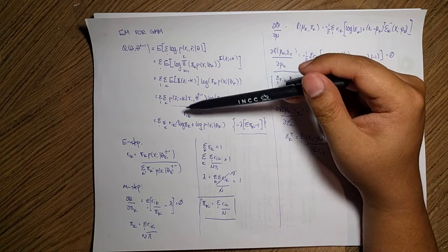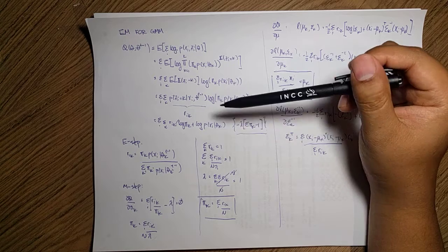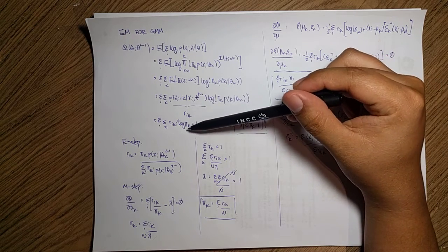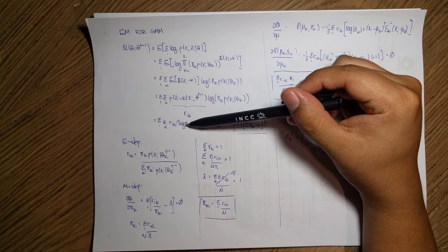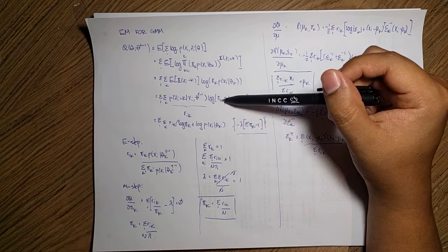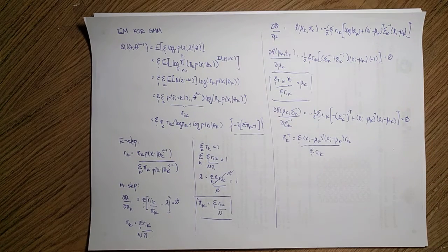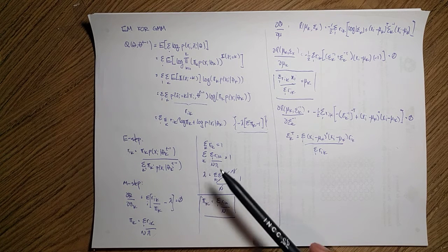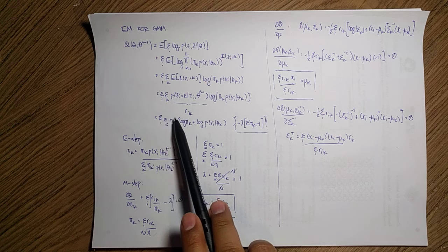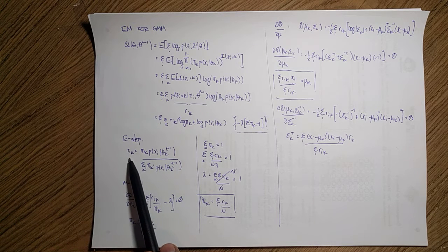We call this the responsibility, and it's the same thing as before. We can expand this: it's the prior for each of those particular Gaussians — how likely it is to belong to this Gaussian — plus this distribution. When we need to compute the E-step, we just need to compute this responsibility r_ik with respect to all the data points.